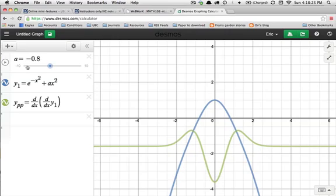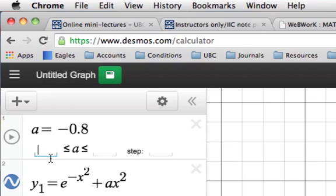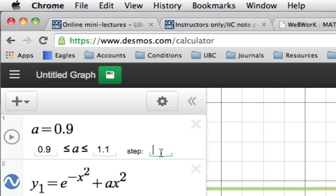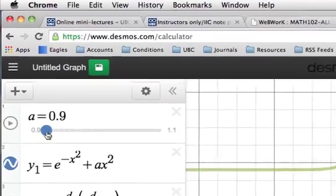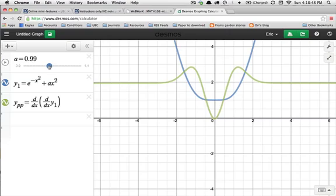So what we need to do is get a little bit closer. Clearly the a values that we need are around 1 and negative 0.5, so I'm going to zoom in on one of those. I'm going to change the interval of a values that I use to 0.9 up to 1.1 and make a step size of 0.01. That will allow me to refine the interval through which I'm moving.